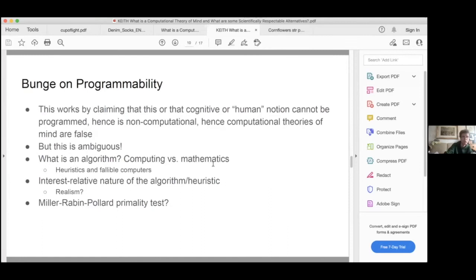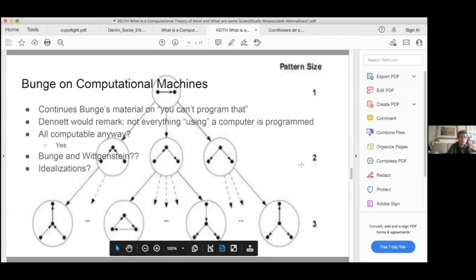He would also claim that the notion of algorithm and heuristic is instance relative. The MRP test is a perfectly good algorithm for something else. It guarantees a solution for some other problem, but not for what you want it for in our case, which is testing for primes. So is that a question of realism? I don't know. And Dennett would say the realistic answer is that there is no realistic answer.